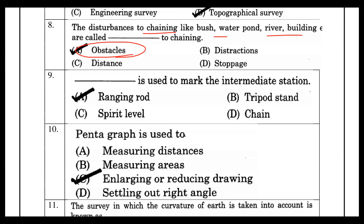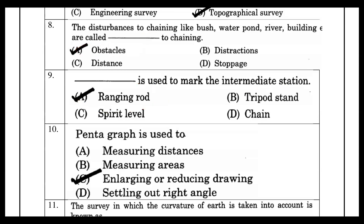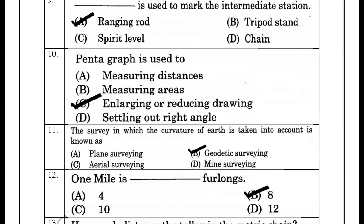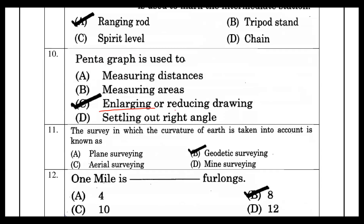Next, we mark intermediate stations to establish range and radius. A pantograph is used for enlarging and reducing drawings, and for setting out distances.